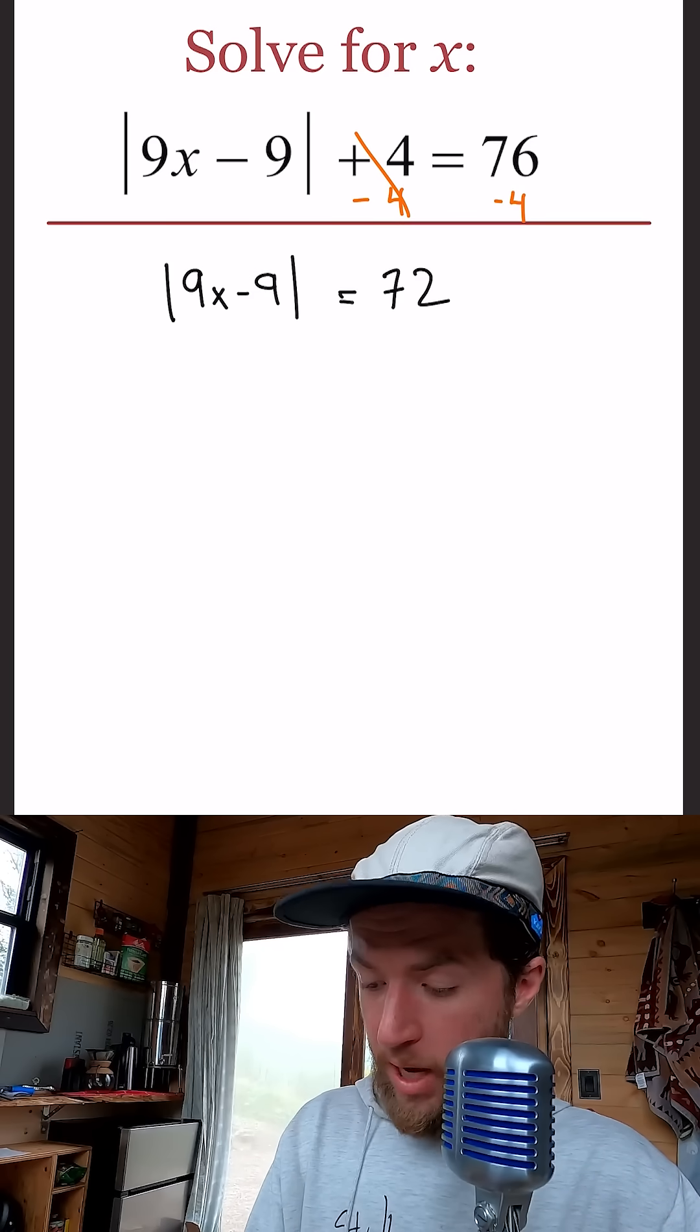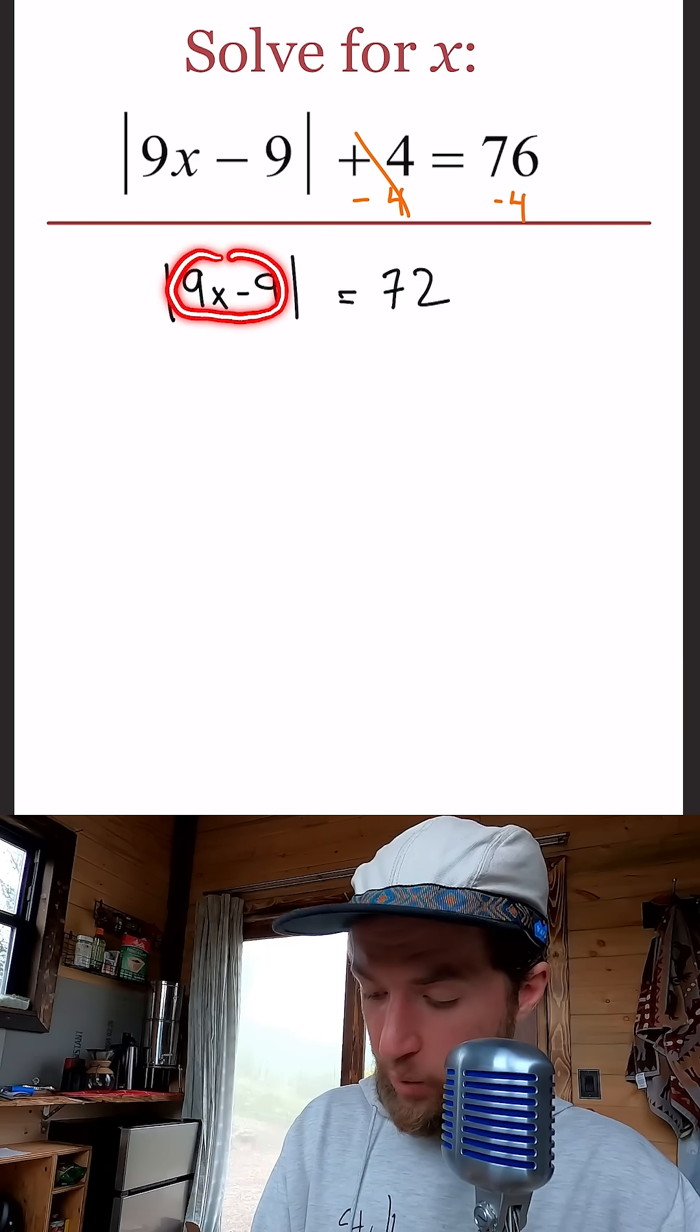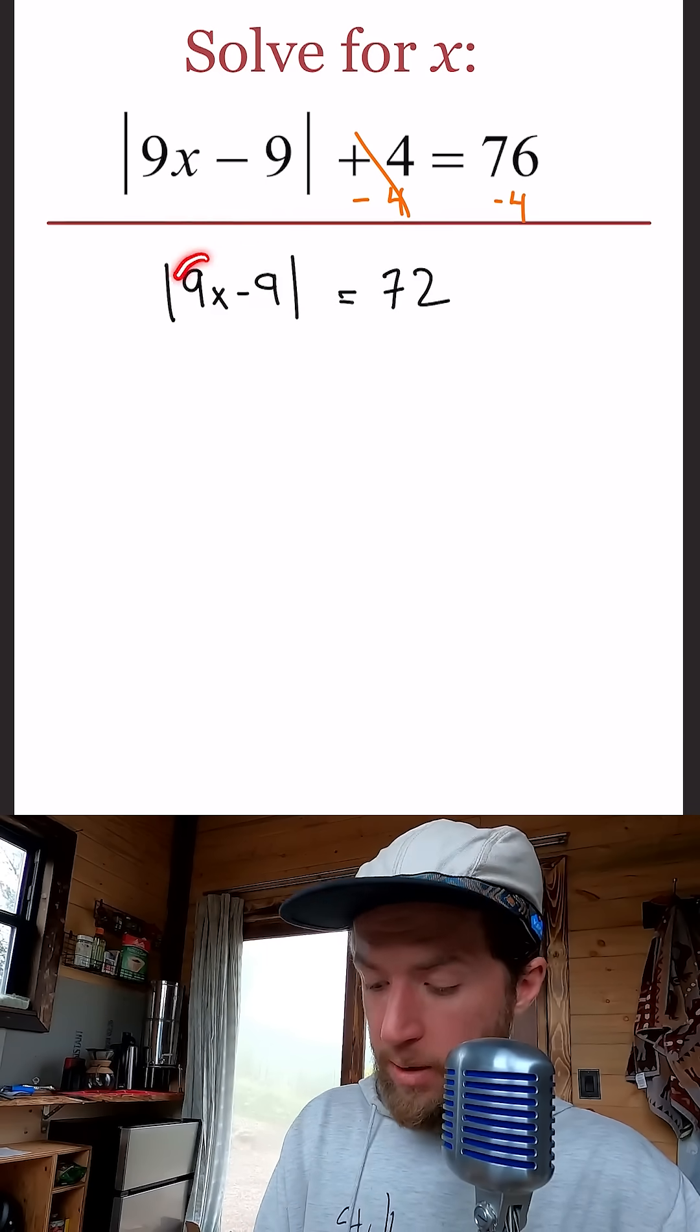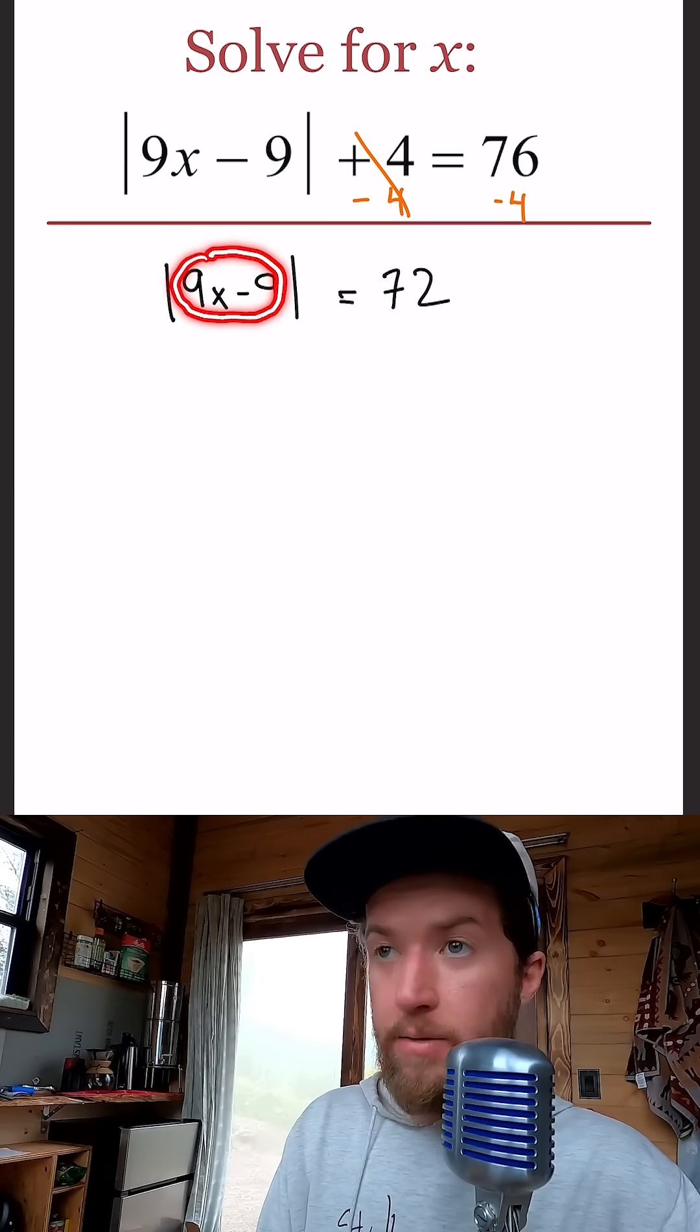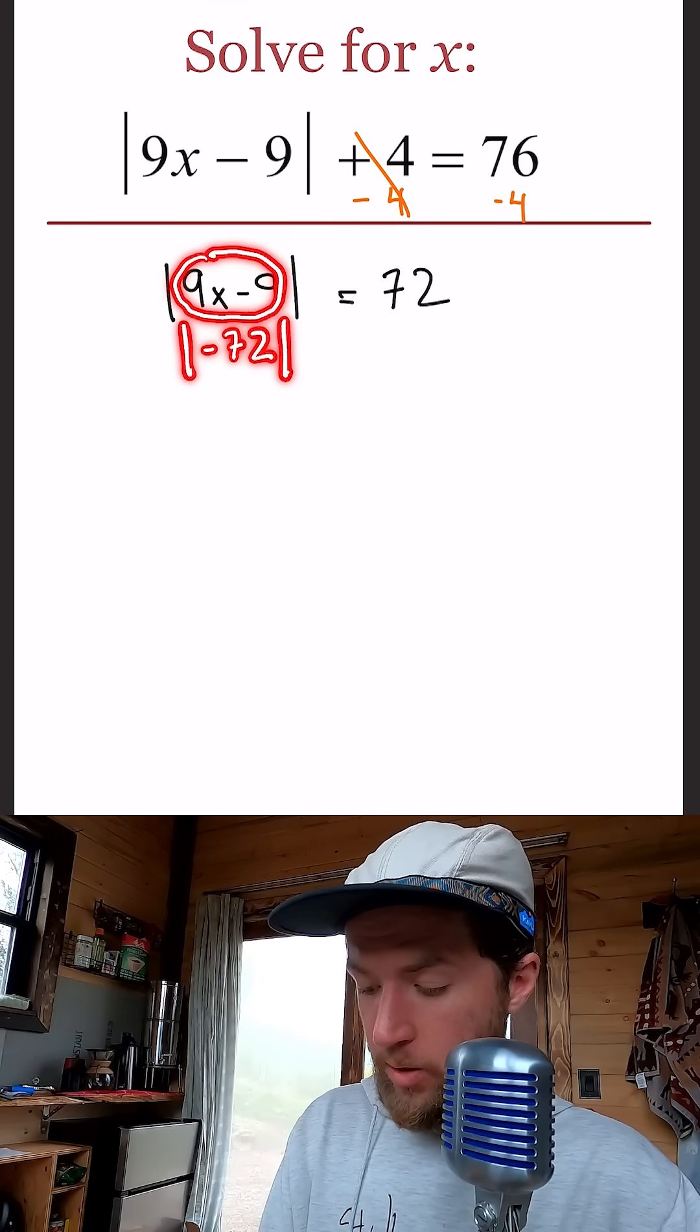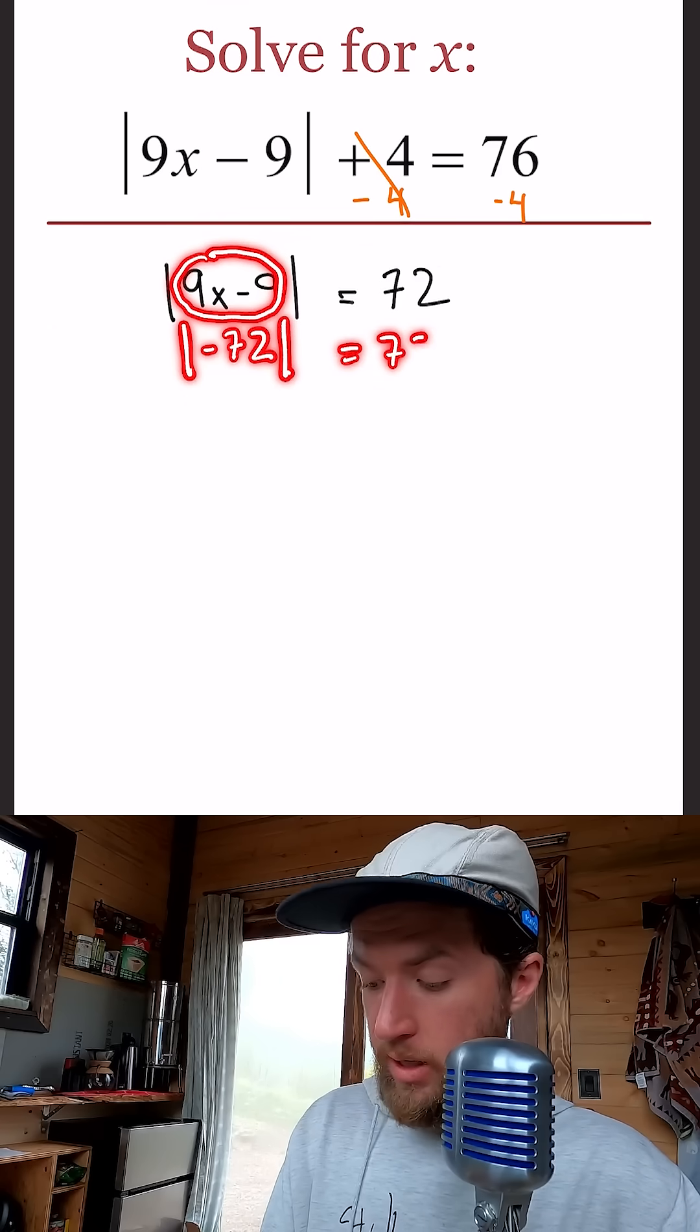So again, if I can make the stuff on the inside equal positive 72, then we're good. That checks out. If I can make the stuff on the inside equal negative 72, that's also good, because the absolute value of negative 72 is positive 72.